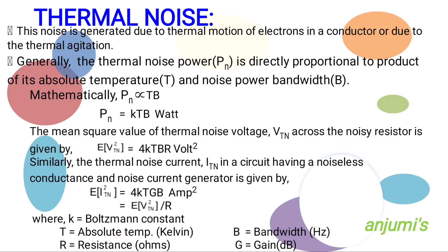So we can write it as: Pn is proportional to TB, and Pn = KTB, where K is Boltzmann's constant (1.38 × 10⁻²³ joules per Kelvin), T is absolute temperature measured in Kelvin, and B is noise power bandwidth in Hertz.